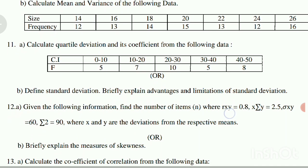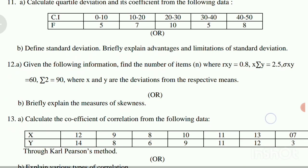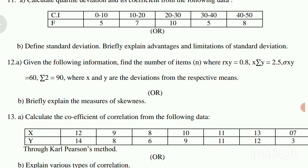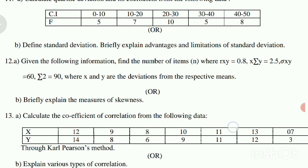Question 12b - Briefly explain the measures of skewness. Question 13a - Calculate the coefficient of correlation from the following data through Karl Pearson's method. Question 13b - Explain various types of correlation. So this is the model paper.